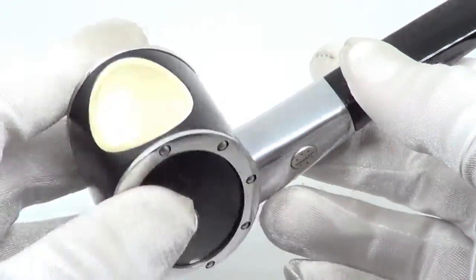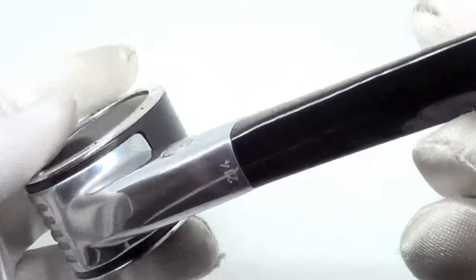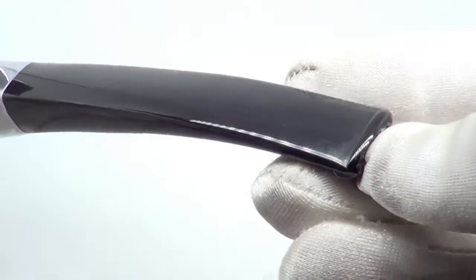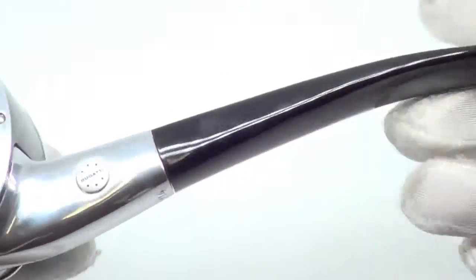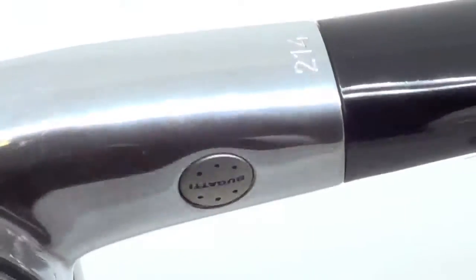And again, that is a meerschaum lining on the inside. This piece is brand new and unsmoked. The pipe is marked Bugatti 214.